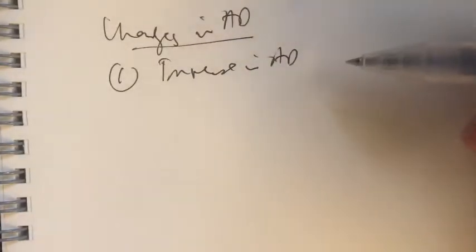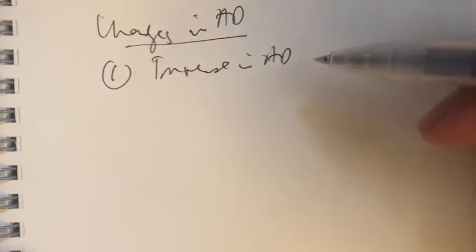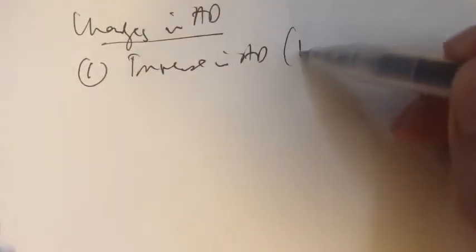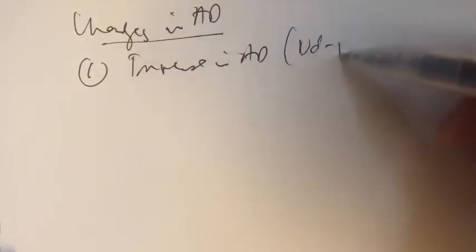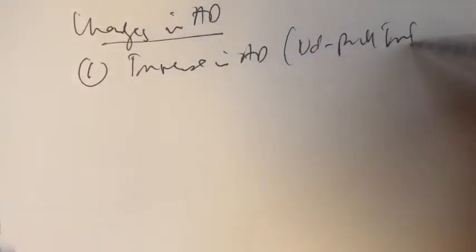Let's take a look at the first instance — changes in aggregate demand first. There are two changes, and we're going to look at the first case, which is an increase in aggregate demand. You may have recalled from the previous topic that when aggregate demand increases, it's basically a demand-pull inflation.